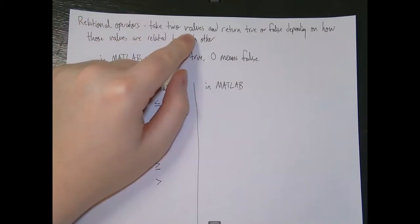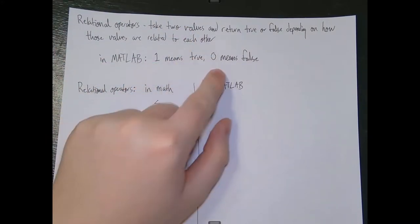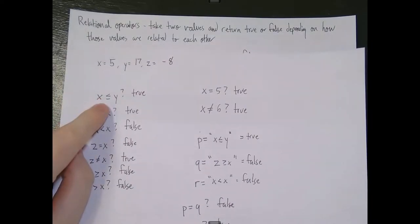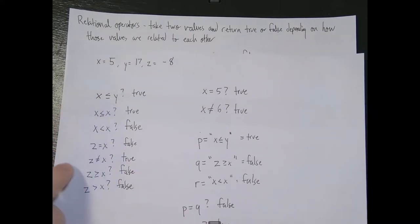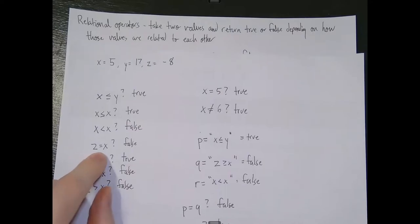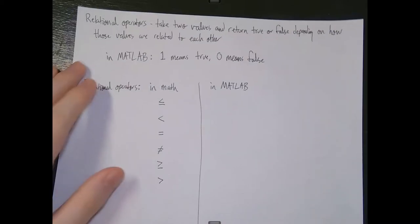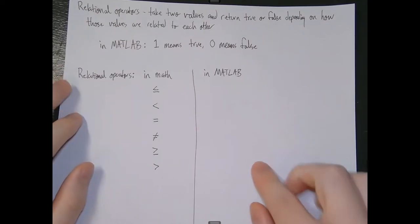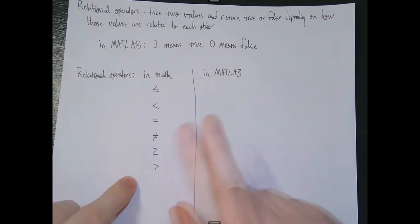You might wonder why values don't include true or false. In MATLAB, we actually consider 1 to be true and 0 to be false. So when we say x is not less than or equal to y, this would output 1 in MATLAB, whereas saying z equals x in MATLAB would output 0. So 1 means true and 0 means false in MATLAB.